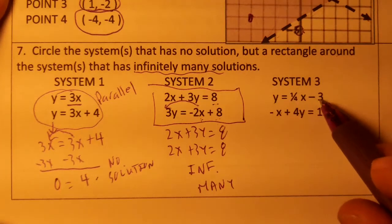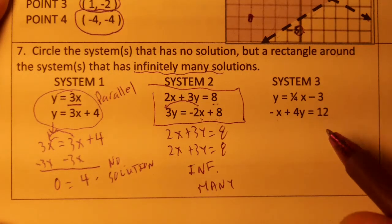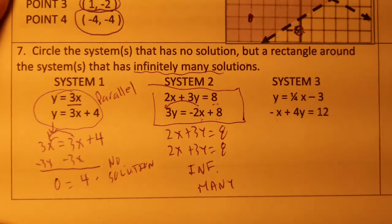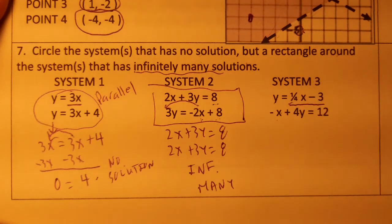And lastly, y equals 1/4x minus 3, and negative x plus 4y equals 12. I know that y, let's see how we're going to do this here. Let's just substitute. So I know y is equal to 1/4x minus 3.